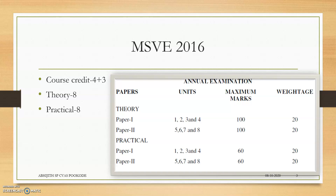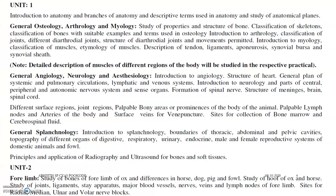There will be 8 theory units and 8 practical units. Unit 1 will be general osteology, arthrology, myology, etc., general angiology, general splanchnology, etc. You will be dealing with the basics of osteology, arthrology and myology.